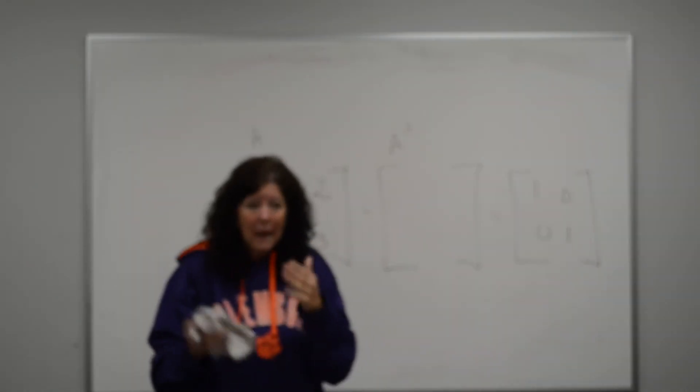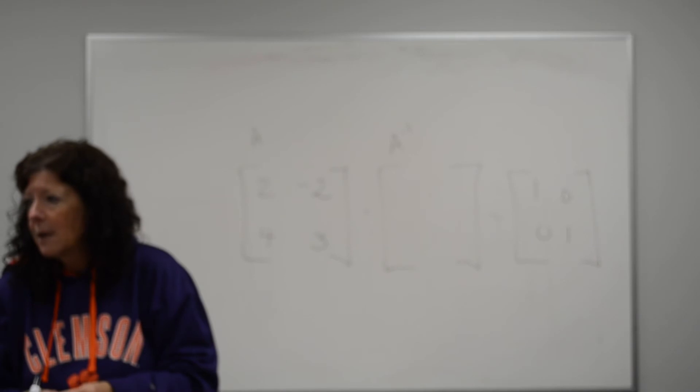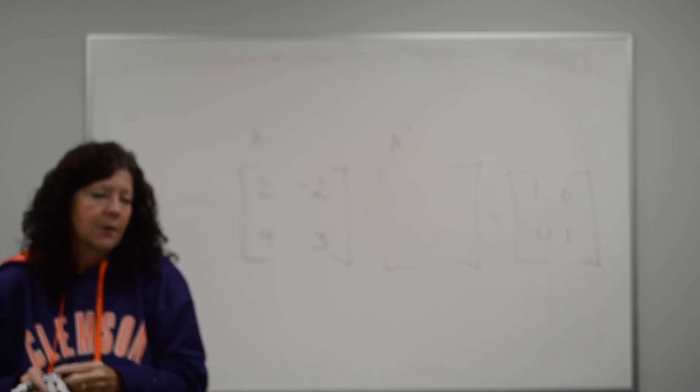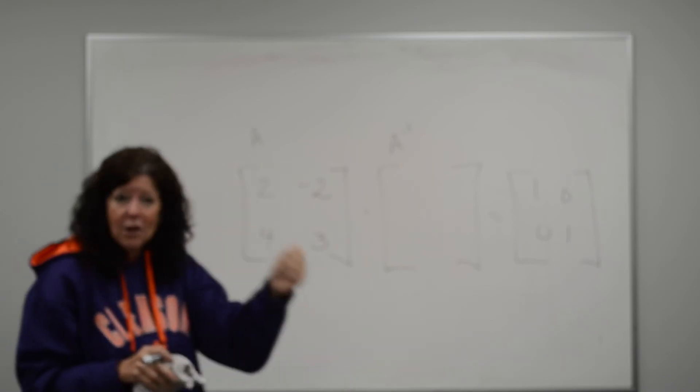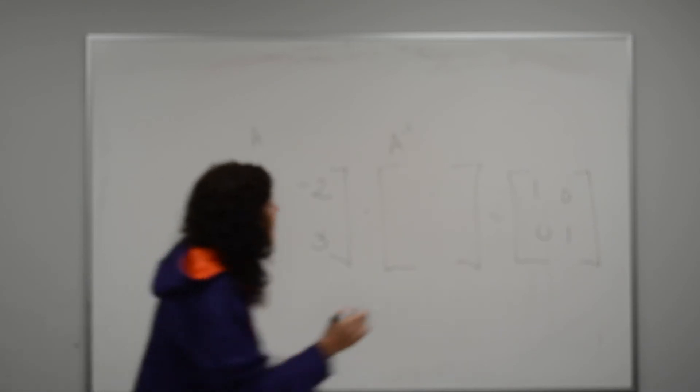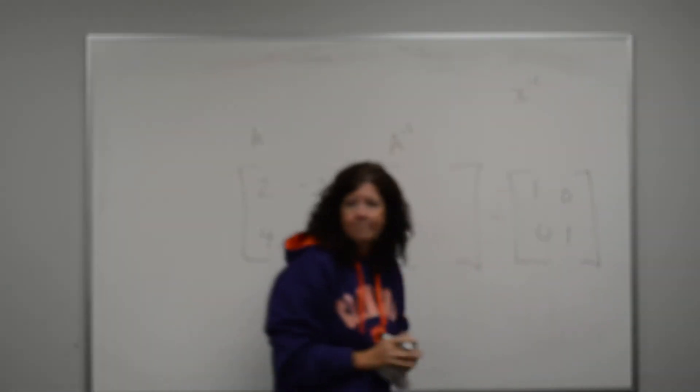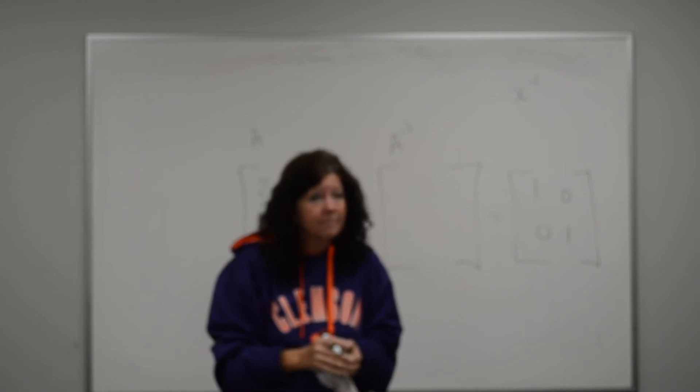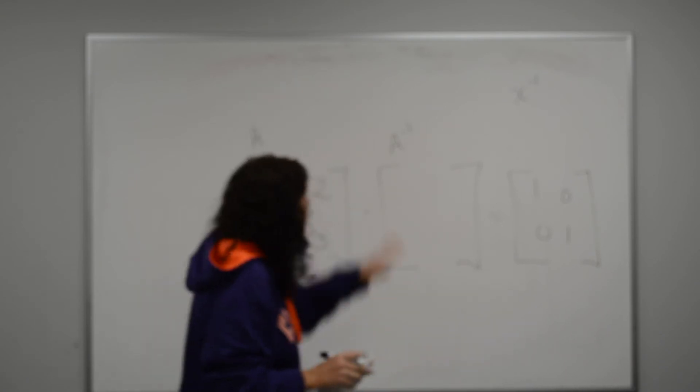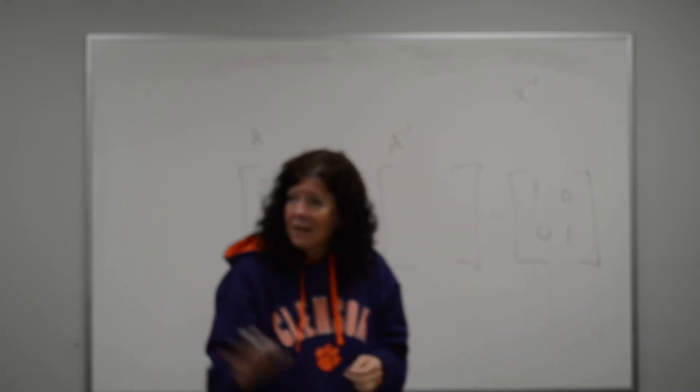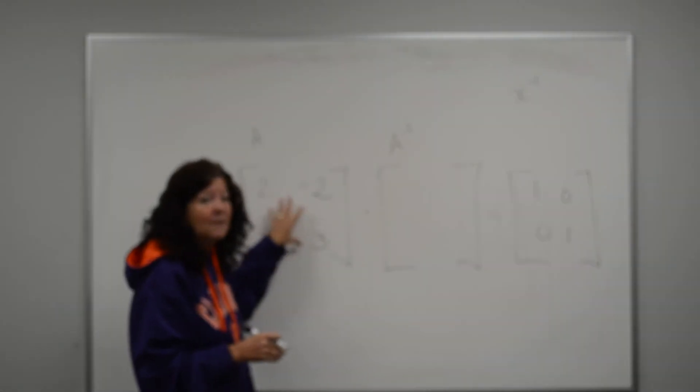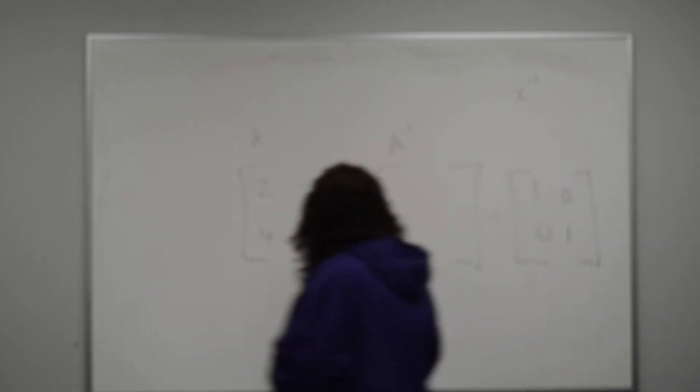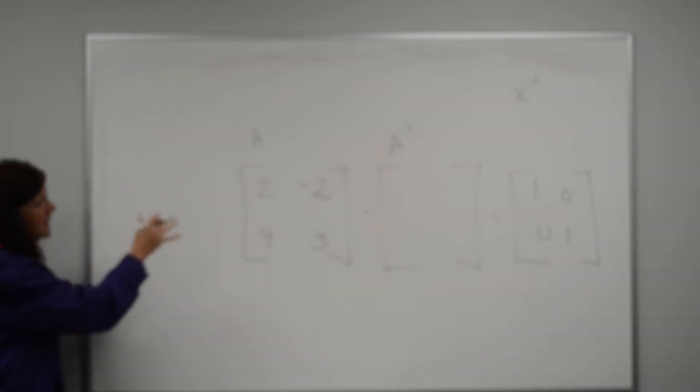There's got to be a matrix that I multiply that by that's going to give me the identity matrix. Just like I multiplied 4 times one-fourth and it gave me 1. Let's say this is A. This is going to be the inverse of A. A to the negative first power is the same thing as an inverse because it's almost like you're putting it underneath 1. There is a way by hand to find the inverse of a 2 by 2 matrix. If you have a 3 by 3 matrix, you're going to put the matrix into your calculator, select the matrix and hit that x to the negative first power button. But a 2 by 2, we know how to do it by hand.